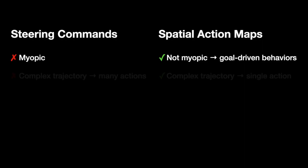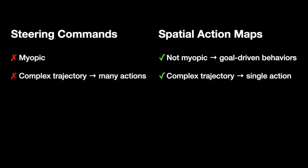Second, a complex navigation trajectory can be represented by a single action. In contrast, if we use steering commands, a complex trajectory would require a long sequence of actions, resulting in sparse rewards for learning.